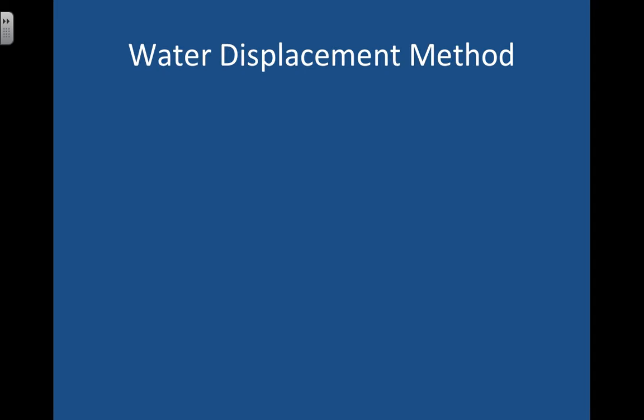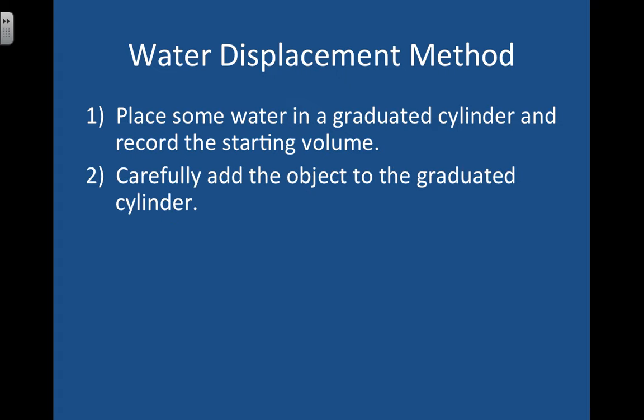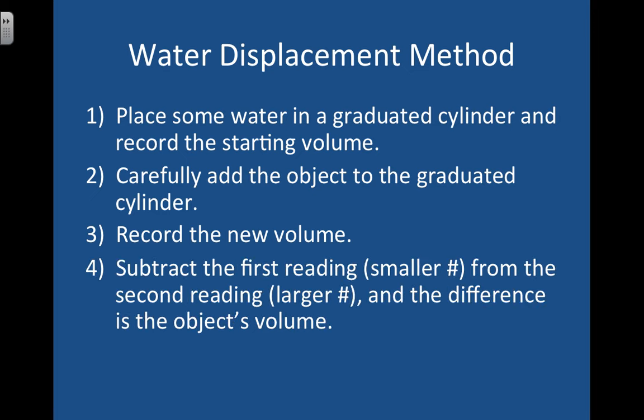So for water displacement method, first you put some water in a graduated cylinder, and you record the starting volume. Then you're going to carefully add your object to the graduated cylinder, and that's going to make the water level go up. You record the new volume, and then you subtract the first reading, which is the smaller number, from the second reading, which is the larger number, and the difference is the object's volume. So when that object goes in the graduated cylinder, the amount that it pushes the water up is going to be its volume.